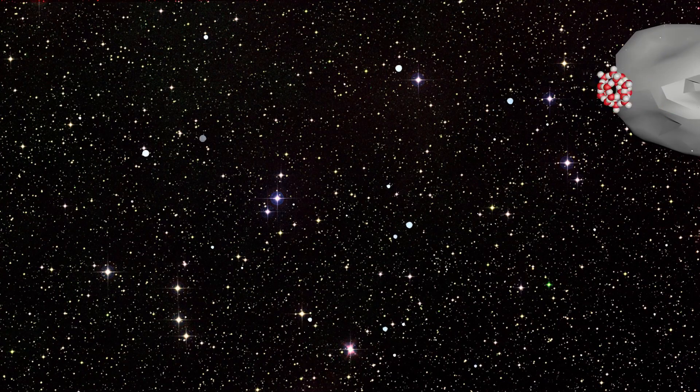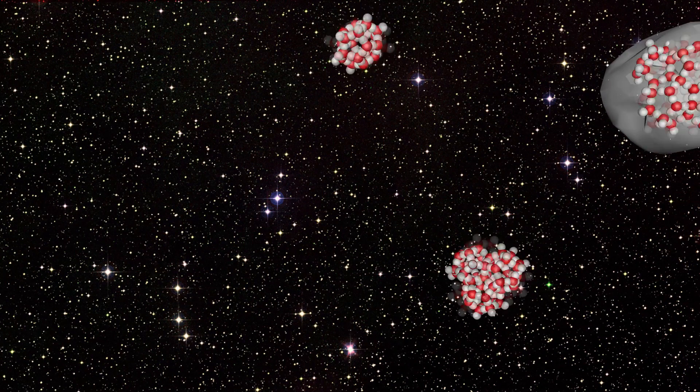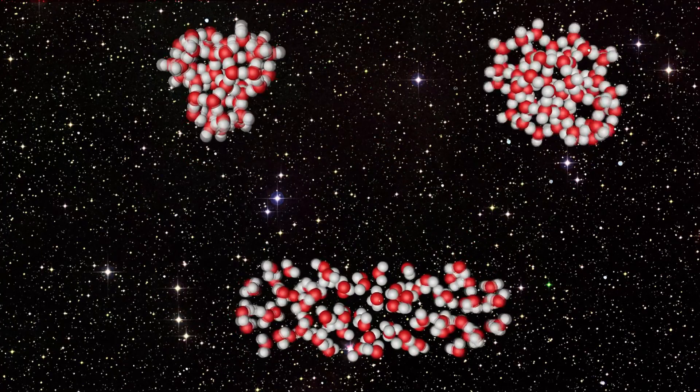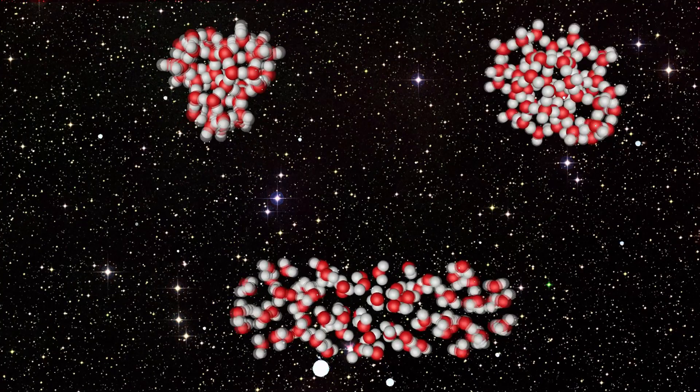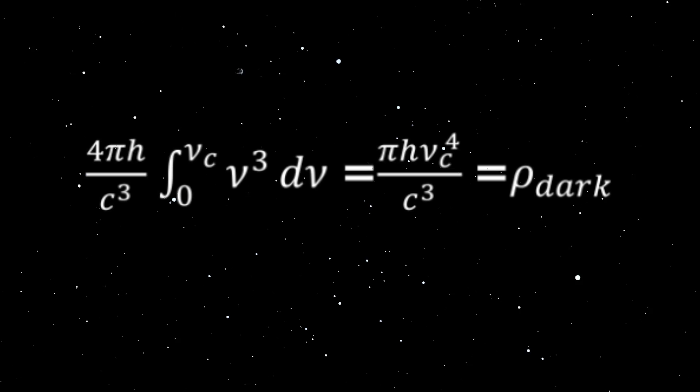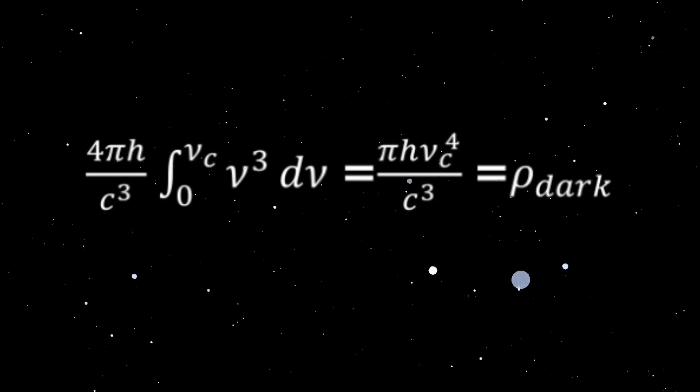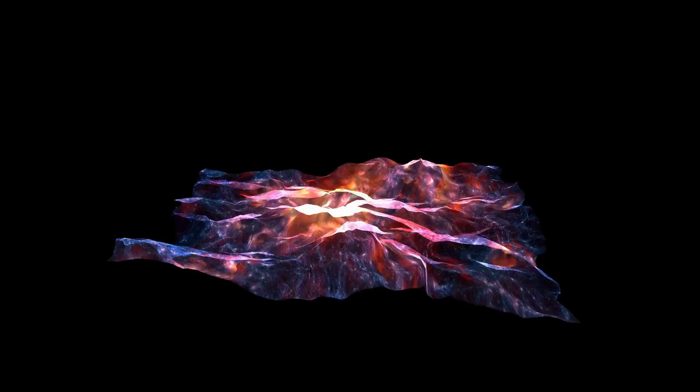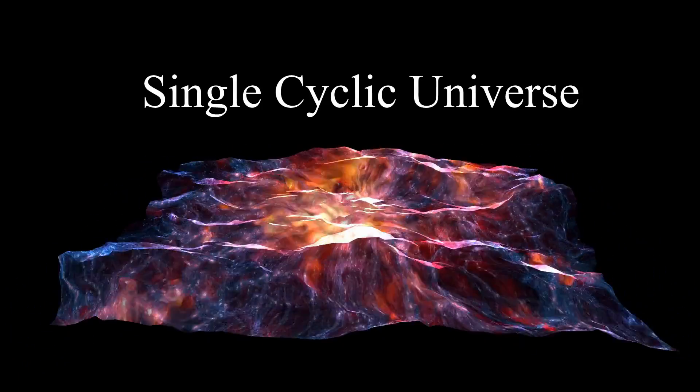As our universe continues to expand, water nanoclusters ejected from cosmic dust will grow larger, and their vibrational frequencies will decrease. Large water clusters are less interacting with the prebiotic molecules of life. With decreasing vibration frequency, dark energy density also decreases. The universe will stop expanding and contract as the gravity of the remaining matter takes over. The universe will expand again, leading to a single cyclic universe instead of an inflationary multiverse.